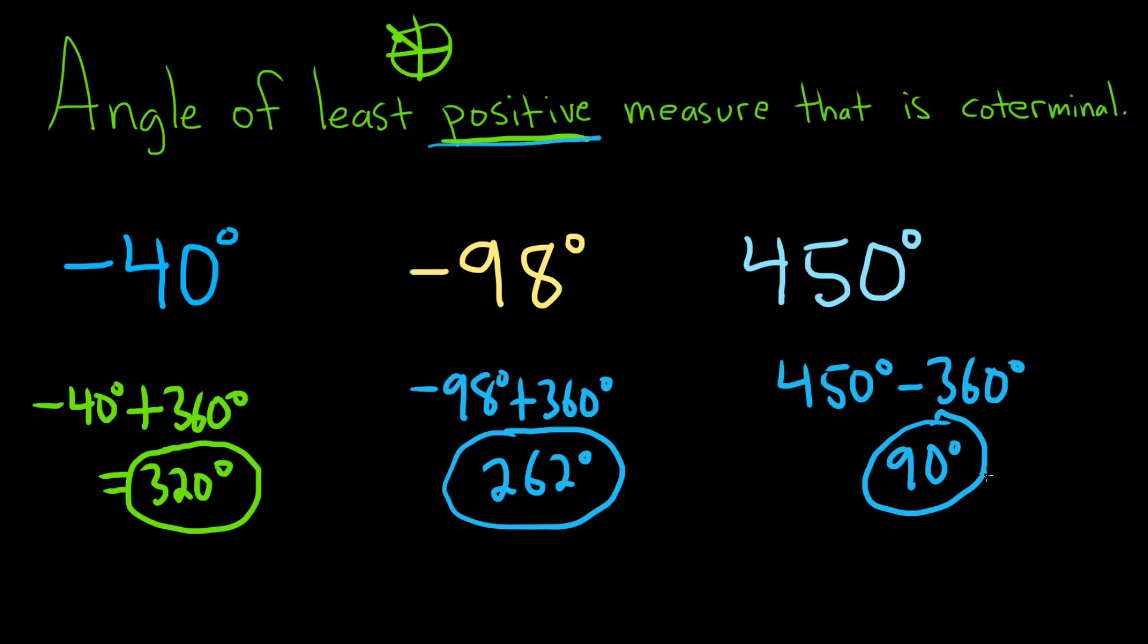I meant to say if you subtract again, you get a negative angle. So you don't want to subtract 360 again, right? Because it has to be positive. That's it.